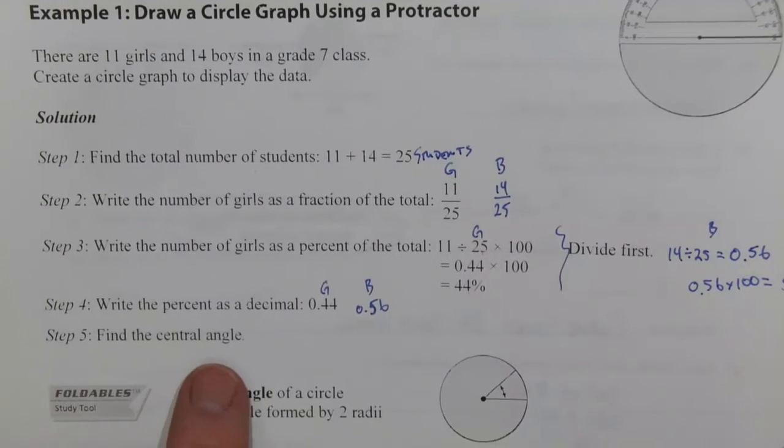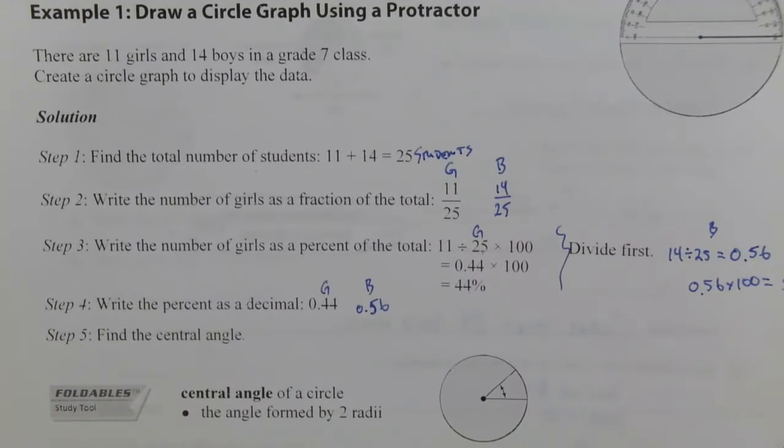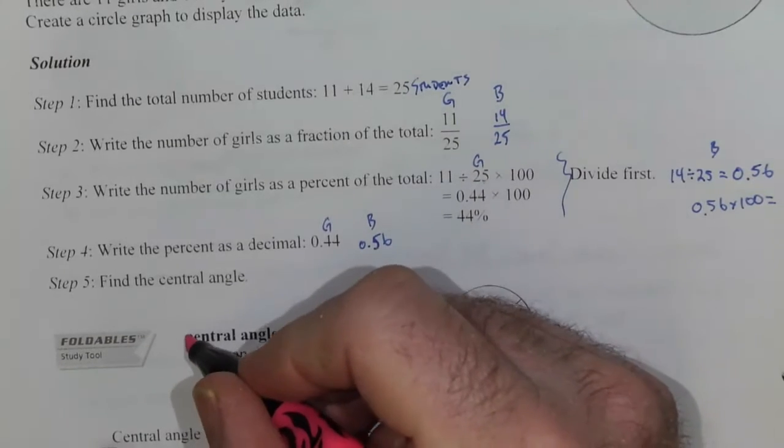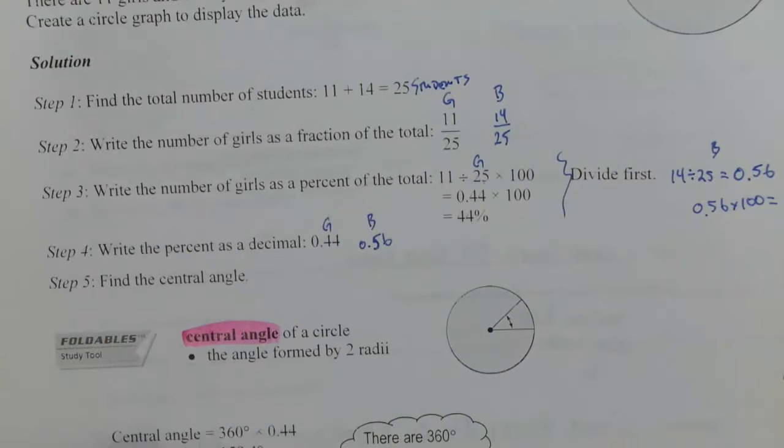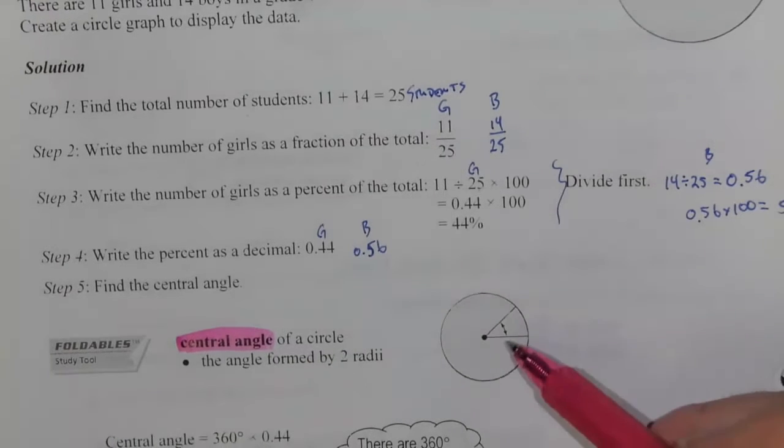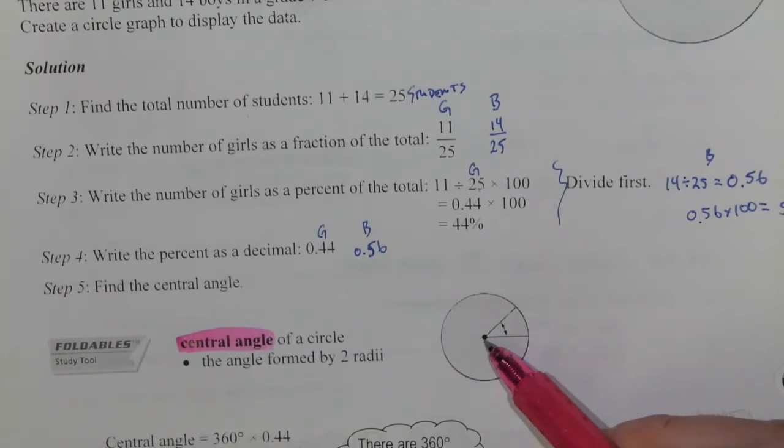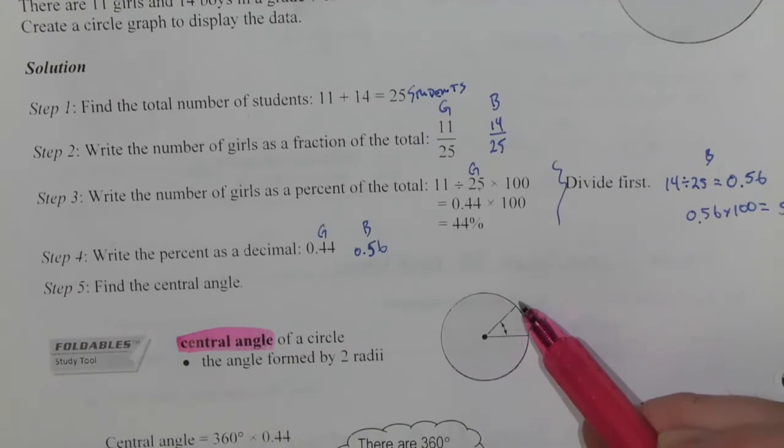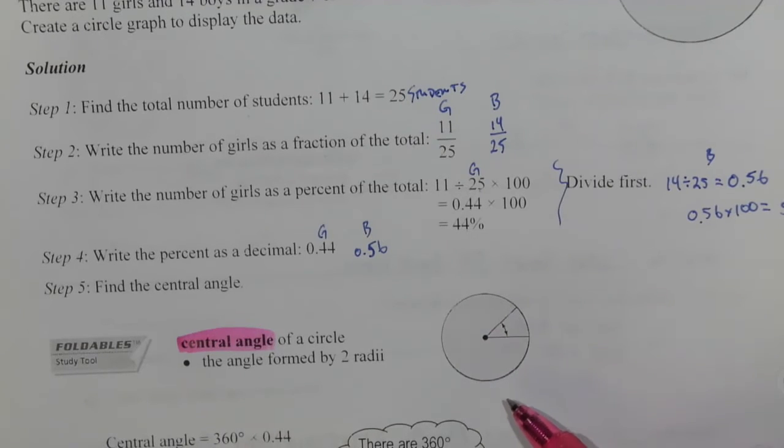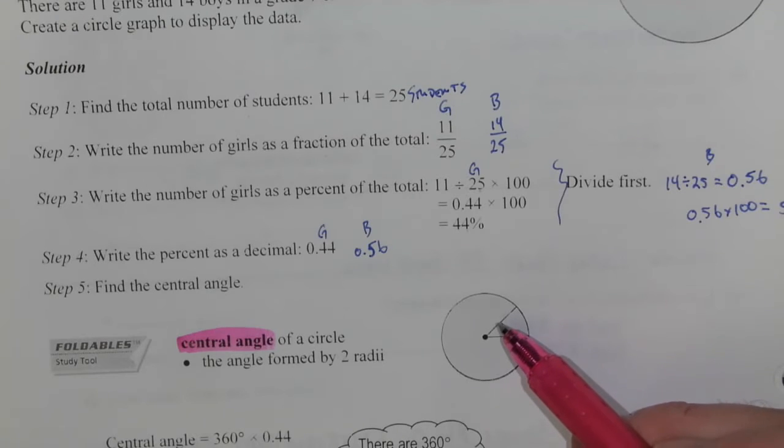Now the question is: find the central angle. Whoa, wait, what? Find the what? Find the central angle. Now a central angle is a central angle of a circle. In this circle we've got a center marked with a dot, and then we've got two radiuses or radii off of that center of the circle going outward.